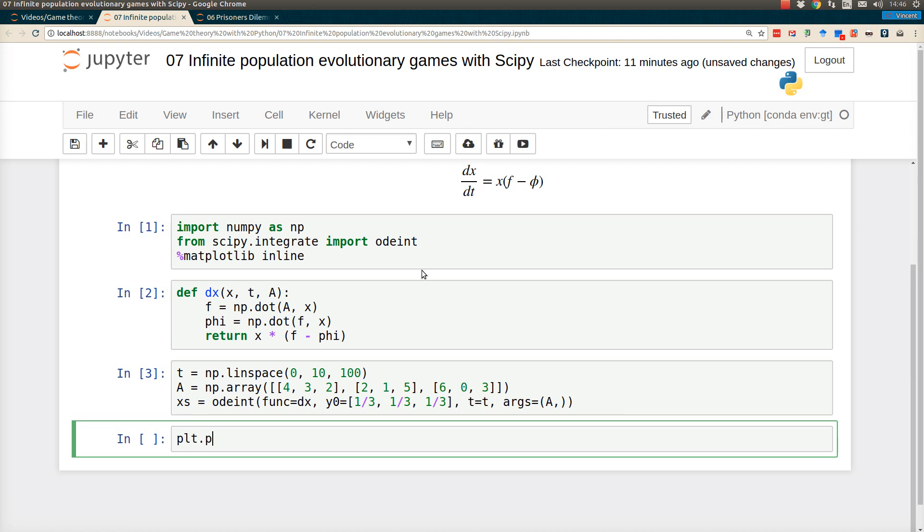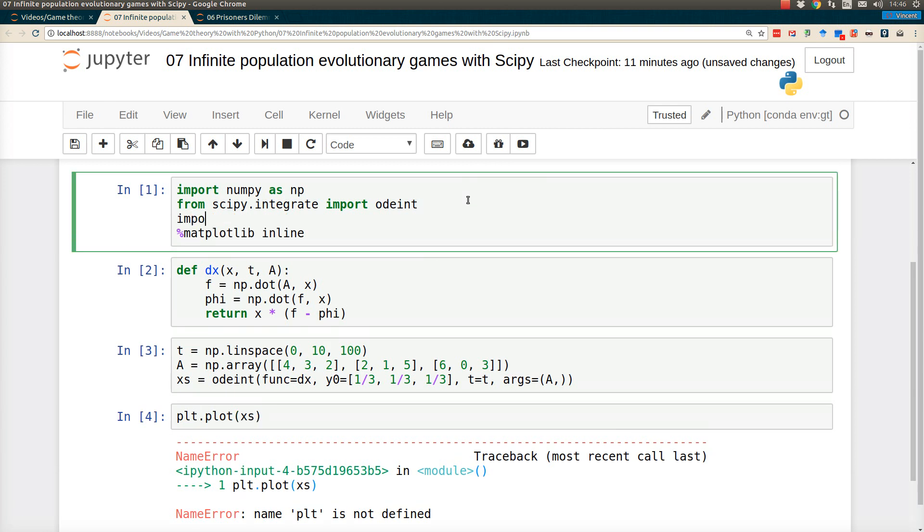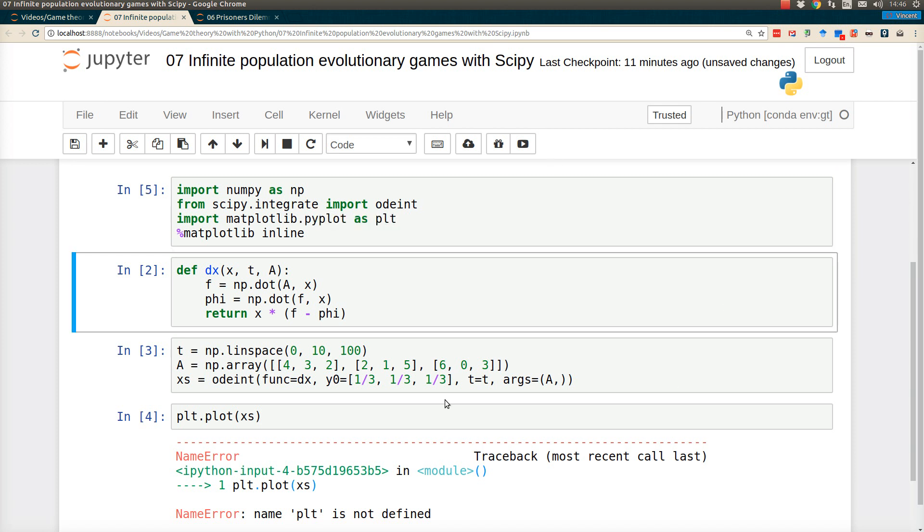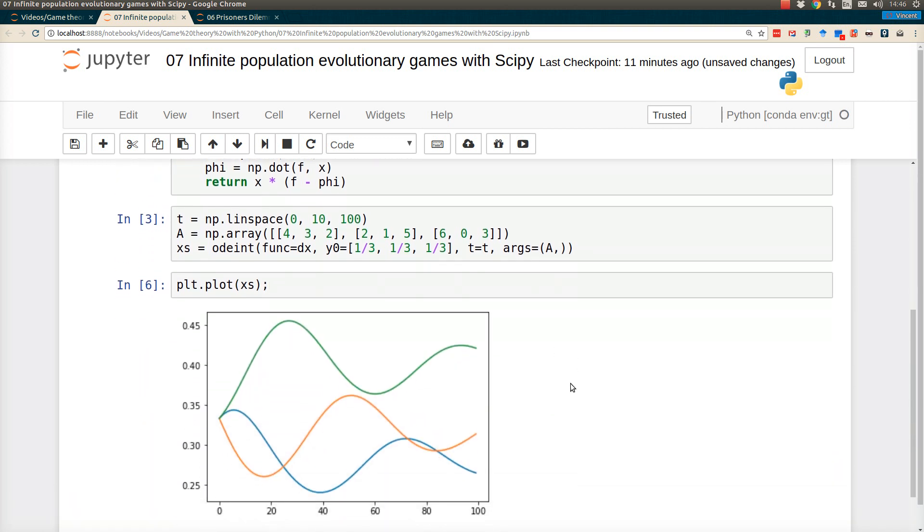Once I've done that, I can plot this using plot.plot all the x's. Oh, I haven't imported plot - my mistake. So import matplotlib.pyplot as plot. What we see is we start with one-third, one-third, one-third, but over time, our population seems to